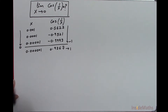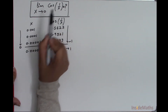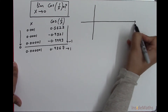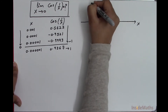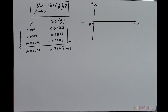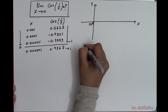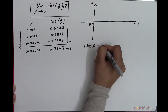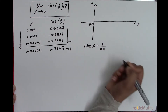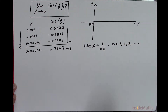So this limit does not exist. Now I will make the graph of this function to have a better picture. This is the x-axis, this is the y-axis, and this is the point (0, 0). I will take x equal to 1 divided by n times pi, where n is a natural number, that is n equals 1, 2, 3, and so on.